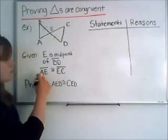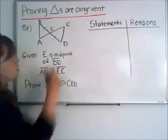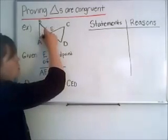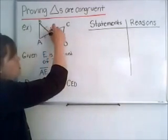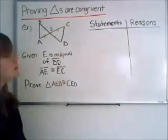We're also given that AE is congruent to EC, and that just comes from being given.